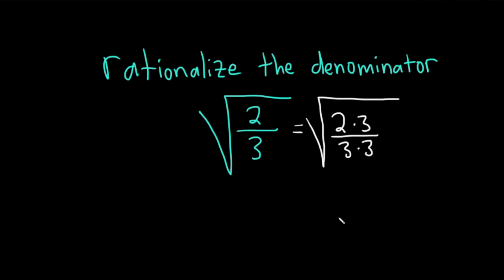Because these cancel, it's really not there. Now this is the same thing as the following: 2 times 3 is 6, and on the bottom we have 3 squared.